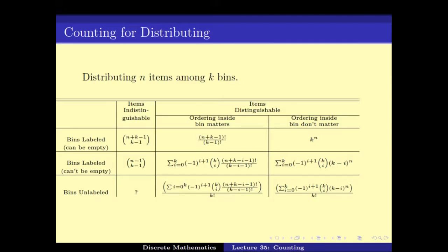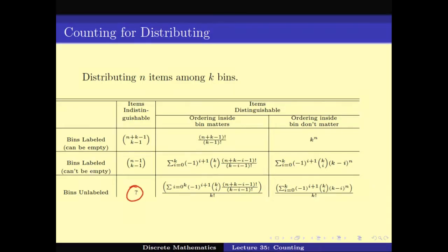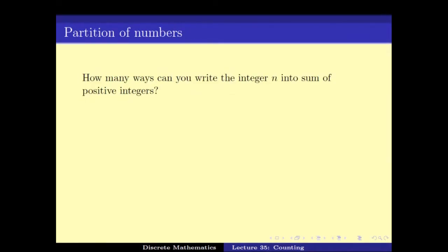We had one case that was left unsolved: namely whether the bins are unlabeled and the items are indistinguishable. This case is related to how many ways you can write an integer as the sum of positive numbers.